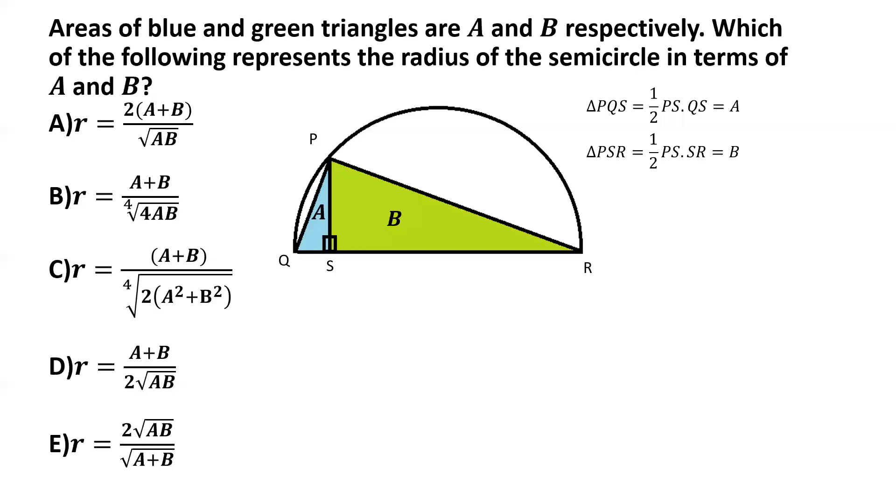So if we divide these two equations, we can get the ratio of QS by SR as A by B. And from this, we can basically take QS as equal to A multiplied by X, where X is some constant, some common constant.